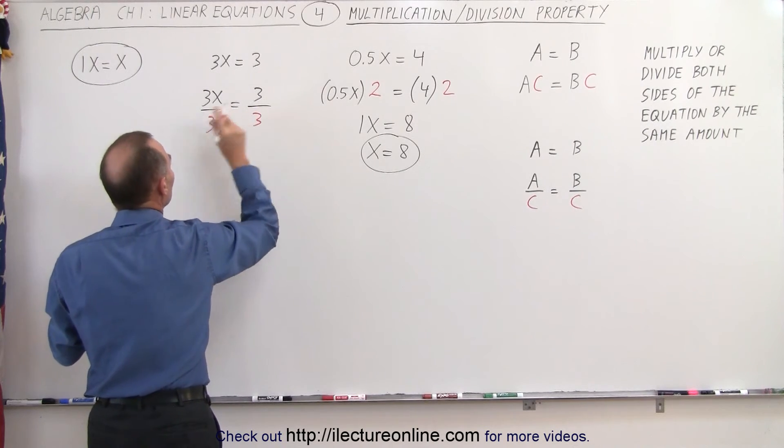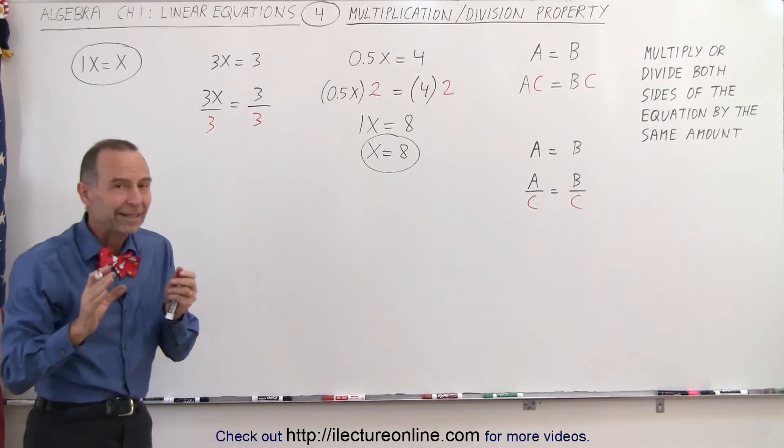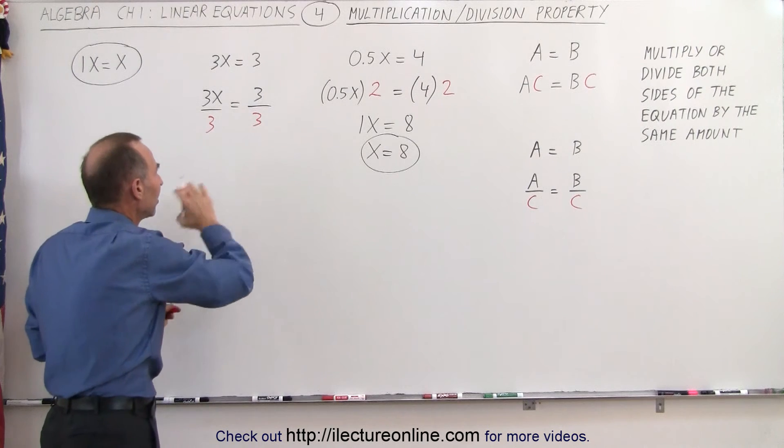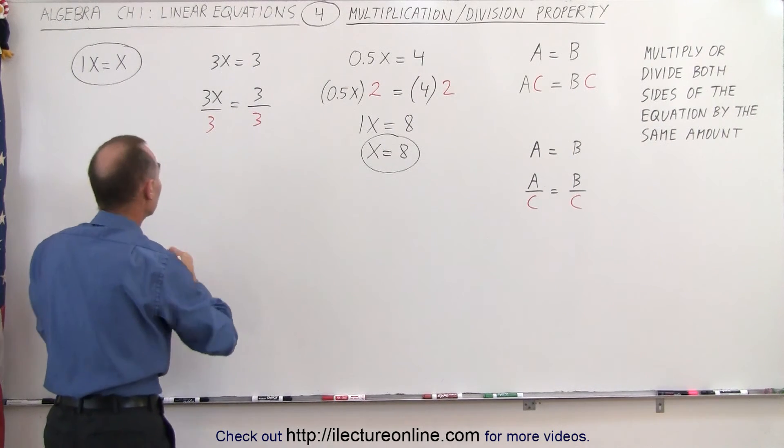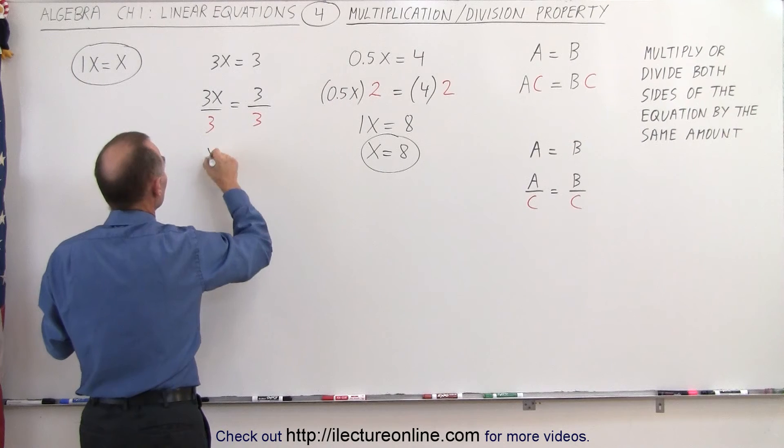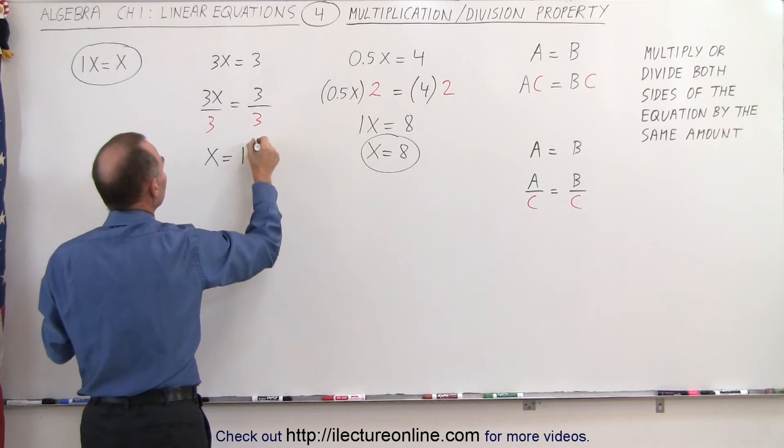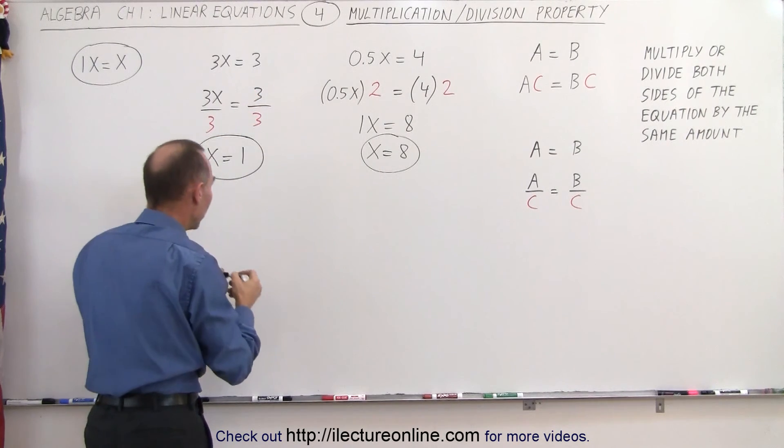the left side should still equal the right side because I did exactly the same thing to the left side as I did to the right side. Now, 3X divided by 3 will simply give me an X, and 3 divided by 3 will give me 1, and therefore X equals 1.